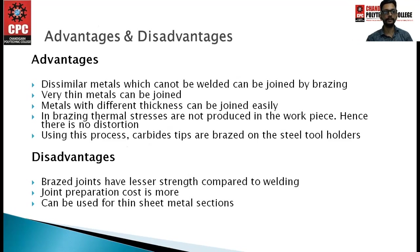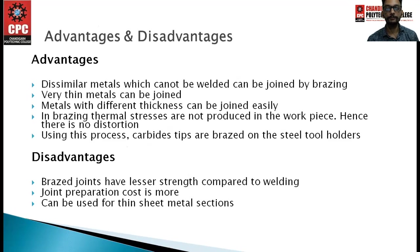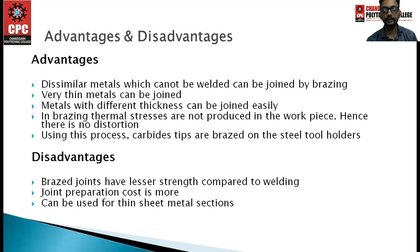Advantages of brazing: dissimilar metals that cannot be welded can be joined; very thin metals can be joined; metals with different thickness can be joined easily; thermal stresses are not produced, so there is no distortion; and carbide strips can be brazed onto steel tool holders. Disadvantages: brazed joints have lesser strength compared to welding; joint preparation cost is more; and it is suitable only for thin sheet metal sections.